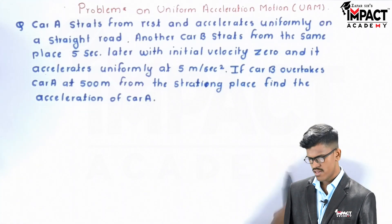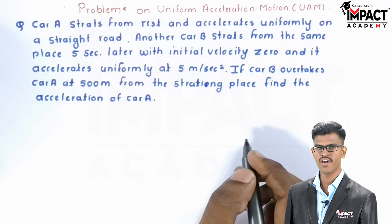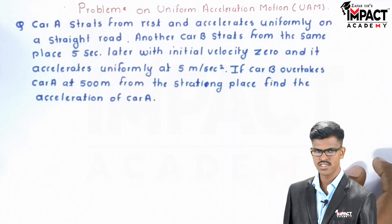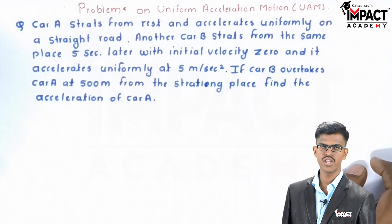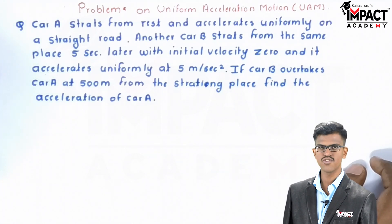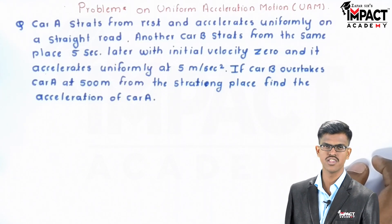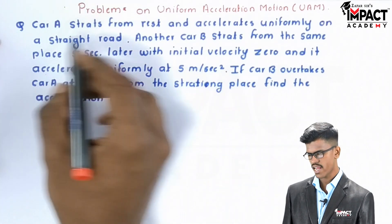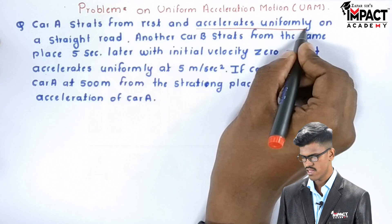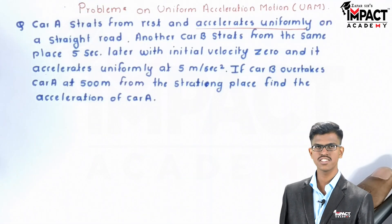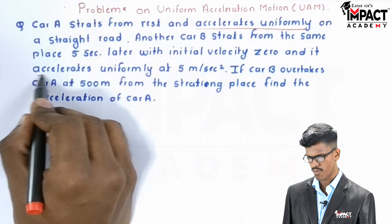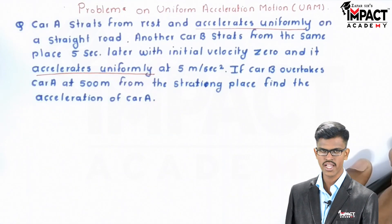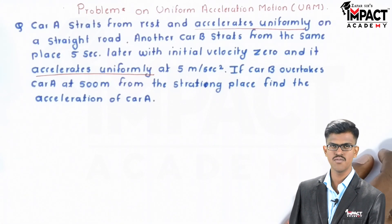While solving the problem, we have to identify which kind of motion this is. It is rectilinear motion, and within rectilinear motion there are 3 types: uniform velocity motion, uniform acceleration motion, and variable acceleration motion. In the question, it is mentioned that car A accelerates uniformly and car B also accelerates uniformly, meaning both cars have uniform acceleration motion.